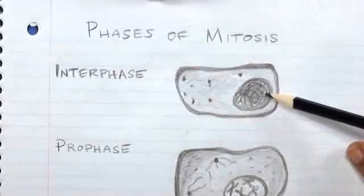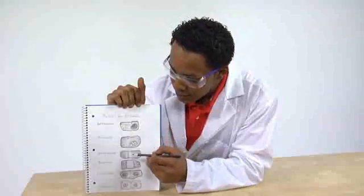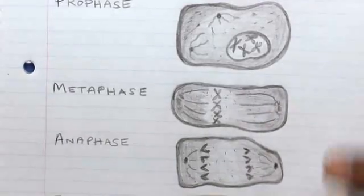I could tell the cell was in interphase because I found the entire nucleus inside. In this picture, the chromosomes lined up at the center, so I knew the cell was going through metaphase.